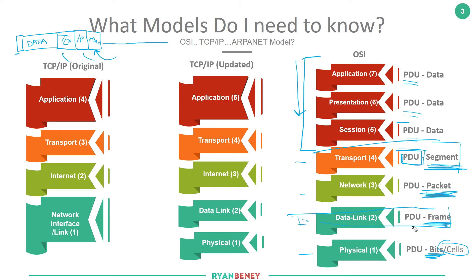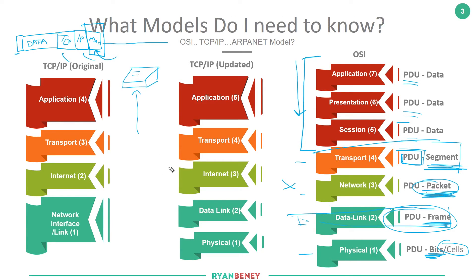Correct terminology matters: you wouldn't say a switch 'switches packets' — a packet is a layer three term, and a switch is purely a layer two device, so the correct term is it 'switches frames.' A hub is a dumb device aware only of electrical signals, so you'd say it repeats bits, not frames. This may seem pedantic, but it will come up in certifications as you move forward in your career.